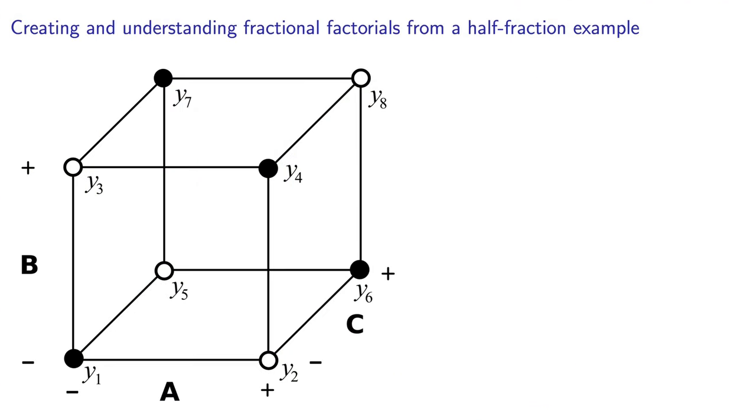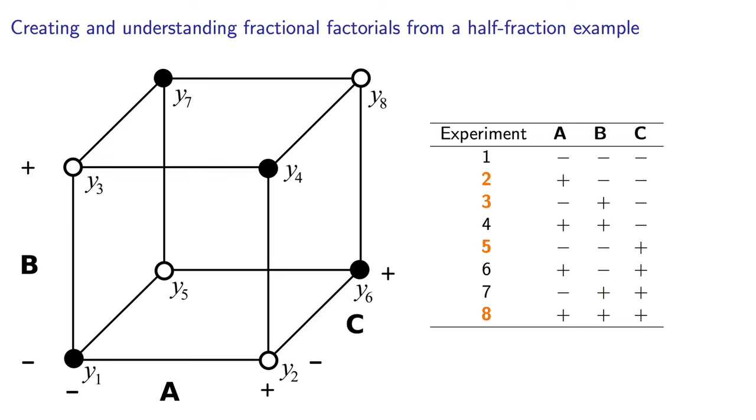So let's get started with that math. Start by writing out the standard order table. Three factors means that there are eight experiments. But in the last video, I showed you that the best four experiments to pick are either the open circles or the closed circles. Let's work with the open circles. They corresponded to rows 2, 3, 5, and 8 from the original standard order table.